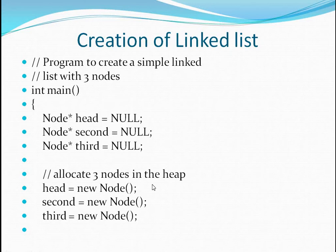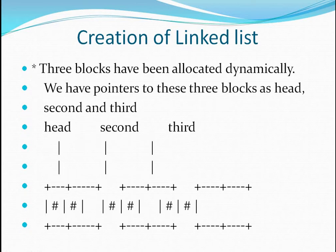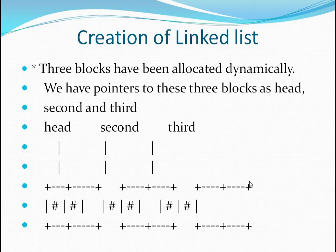Now we are going to allocate these three nodes in the heap — that means in the memory I am going to create space for these three nodes. I have given them space in the memory heap with the help of the 'new node' function, and head, second, and third are the names of the three nodes created. Three blocks are allocated dynamically in the memory, and we have pointers to these three blocks which we call head, second, and third.